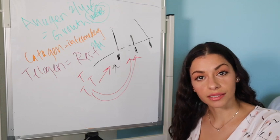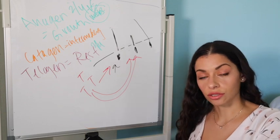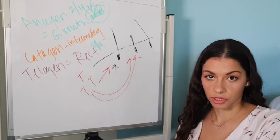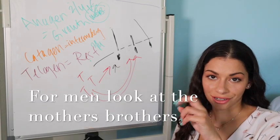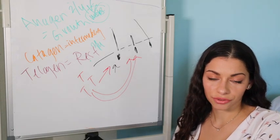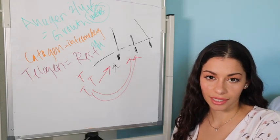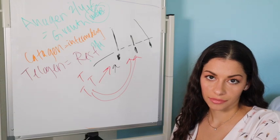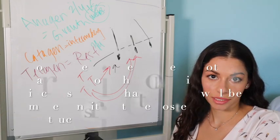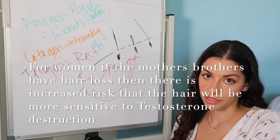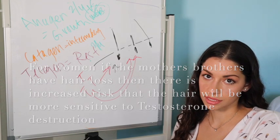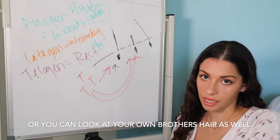What I'm saying is you can look at your mom's brothers to see how their hair is doing. If it's not doing too good, you will likely have the same kind of hair. If you're a woman, you can see if hair loss runs in your family, and you might be at increased risk for hair loss as well.